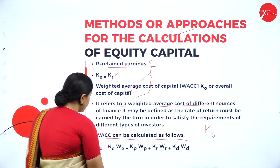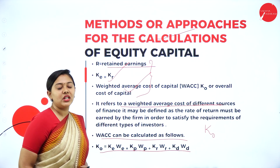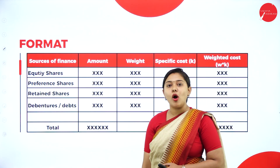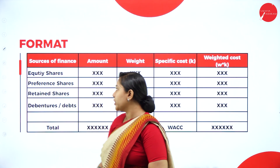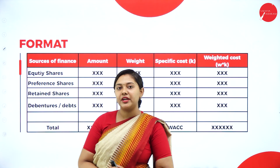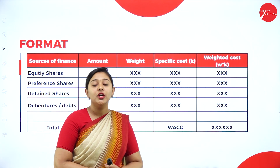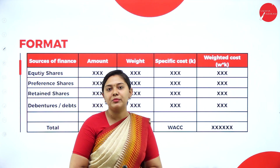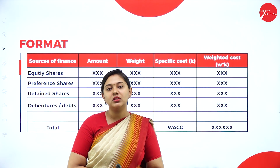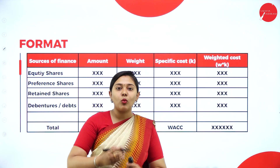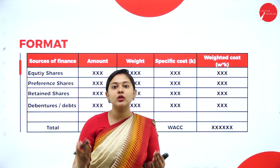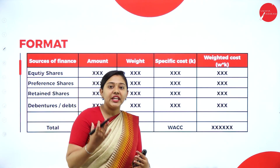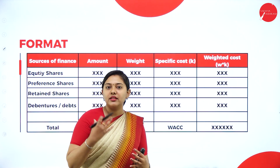WACC can be calculated using its formula. The format for computation of WACC will be asked for 15 marks in the examination. You must calculate each specific cost — redeemable or irredeemable, before tax or after tax — and once all specific costs are calculated, you can easily compute the WACC table.